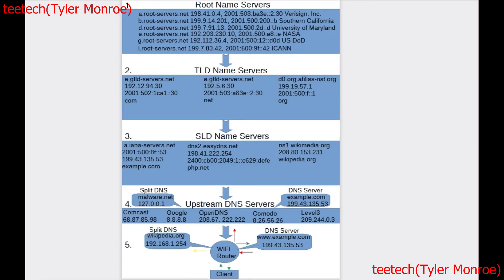You don't usually access root name servers, TLD servers, or even second-level domain servers directly unless you're an administrator. This is where companies host their own domain names. For example, example.com — or my site, tkmonroe.com — is hosted by Namecheap, which has a second-level domain server for my zone, tkmonroe, under the TLD .com, and manages it in that way.